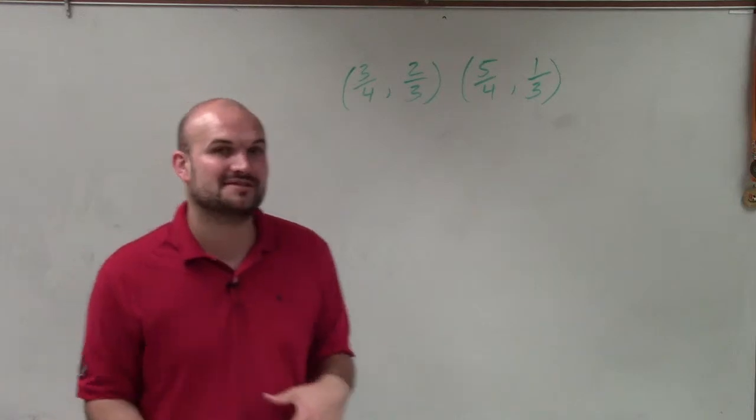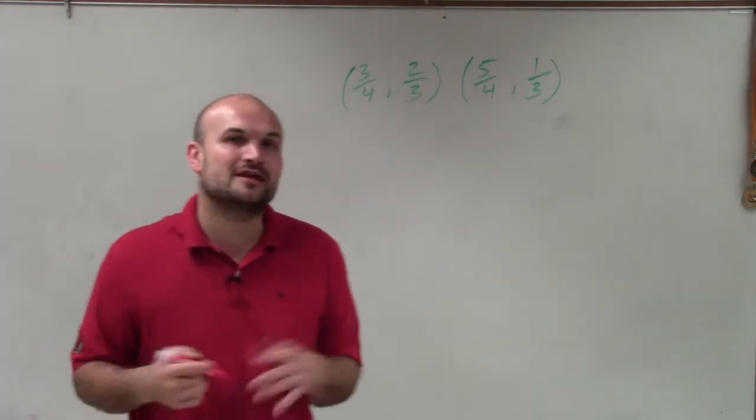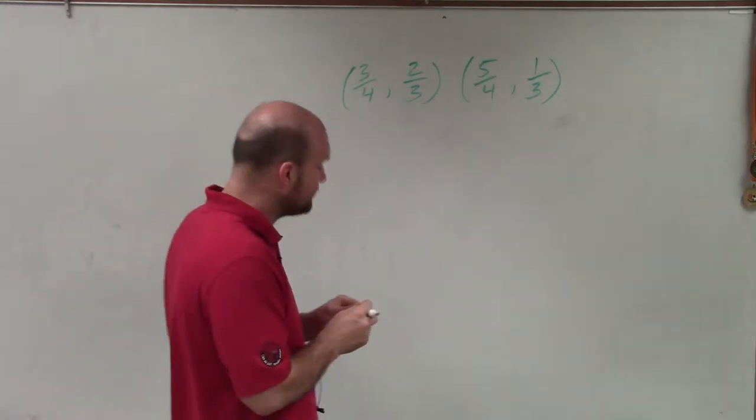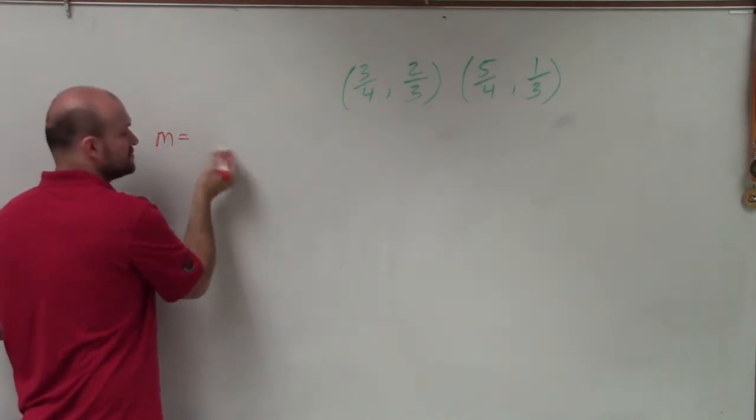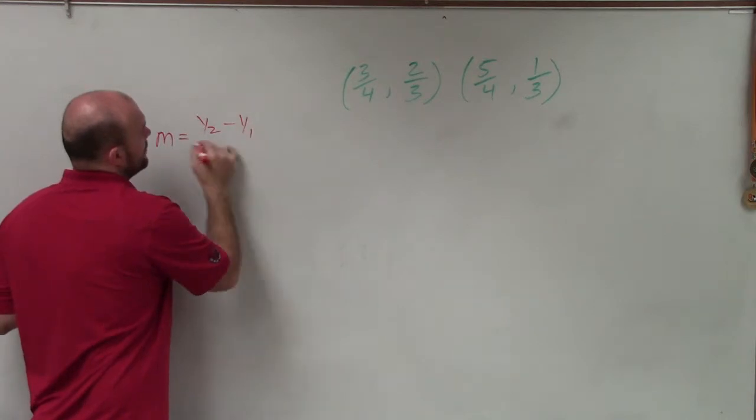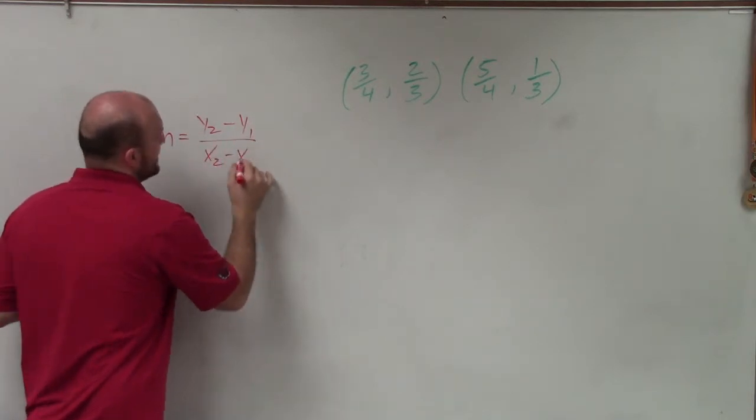Now when we're given two points and we want to find the slope, the best possible way is usually using the slope formula, or this formula to determine slope, which is m equals, which we represent a slope, y2 minus y1 over x2 minus x1.